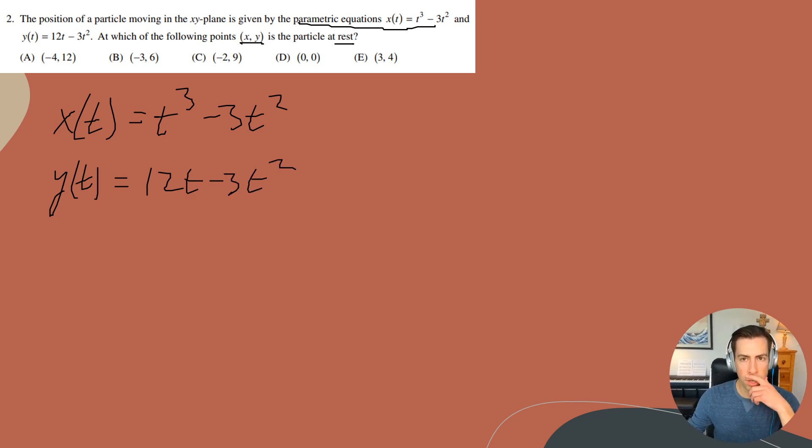Now we want to figure out at which of the following points is the particle at rest. The first thing that we need to do is figure out what time the velocity of the particle is zero. The way we can do that is, well, we know that if we have the position function, if I take the derivative of it with respect to time, this is going to give me my velocity. And I want to set that equal to zero.